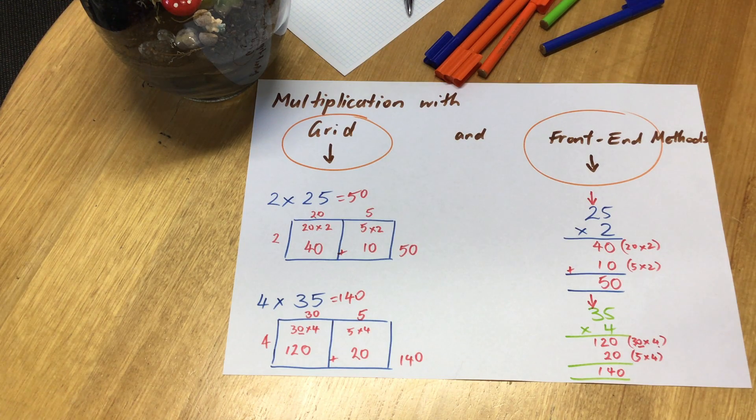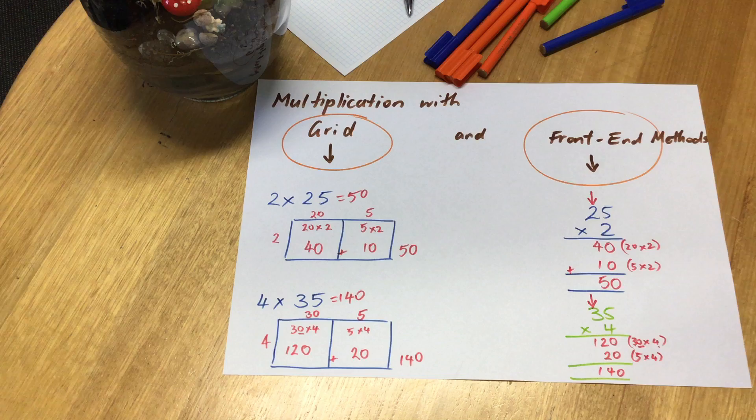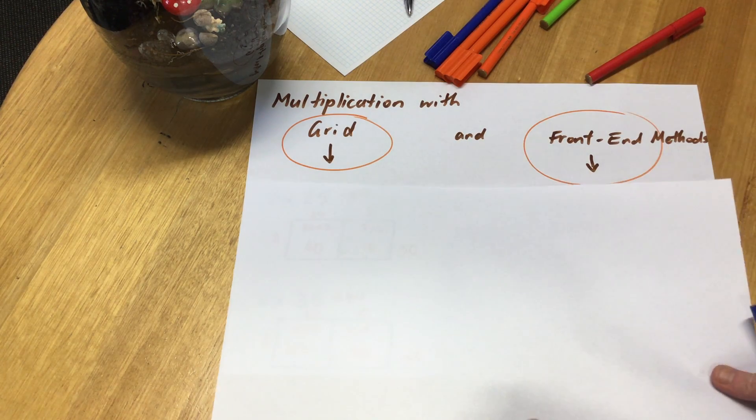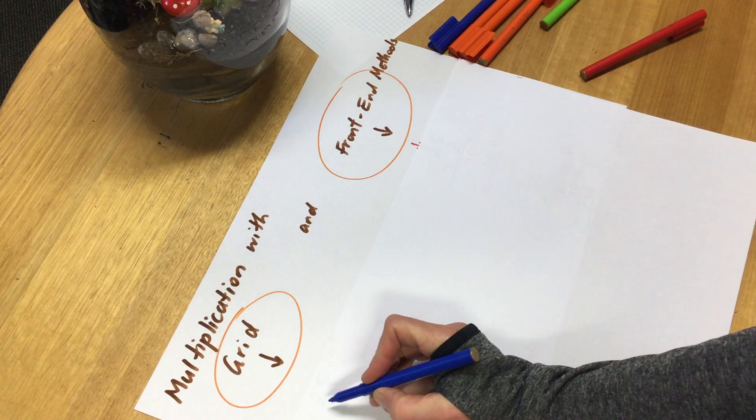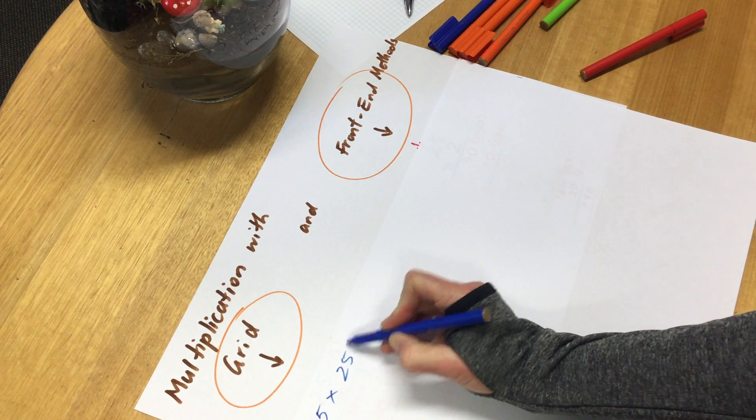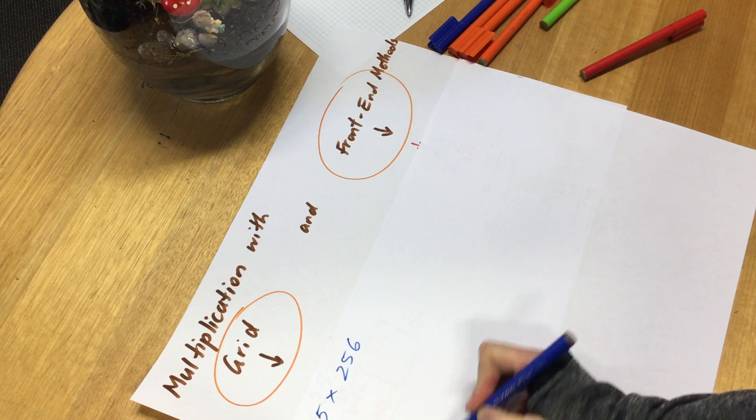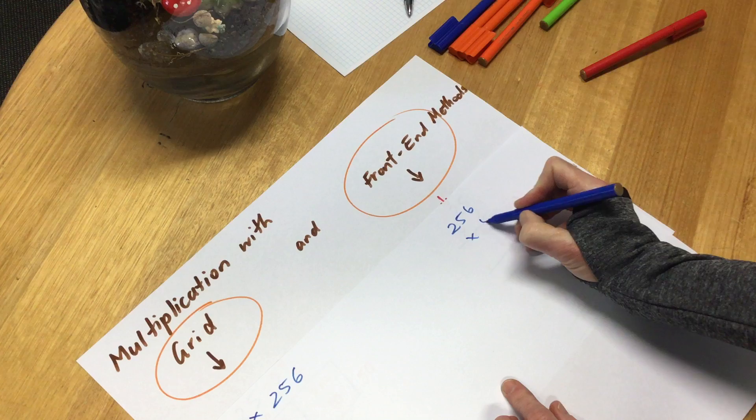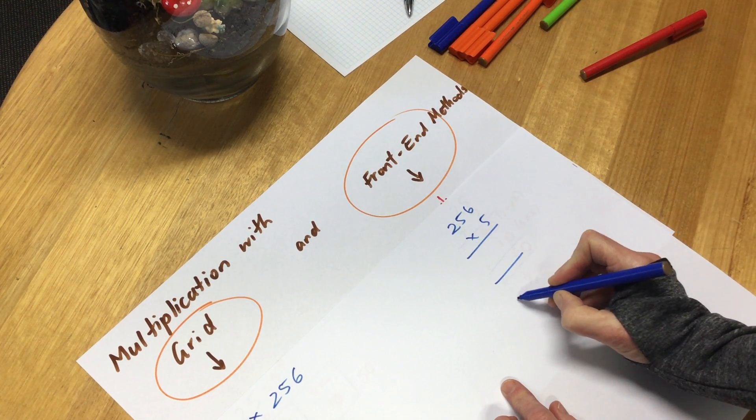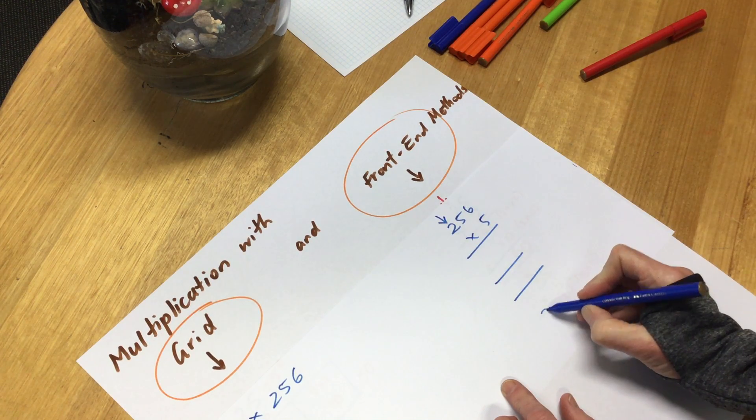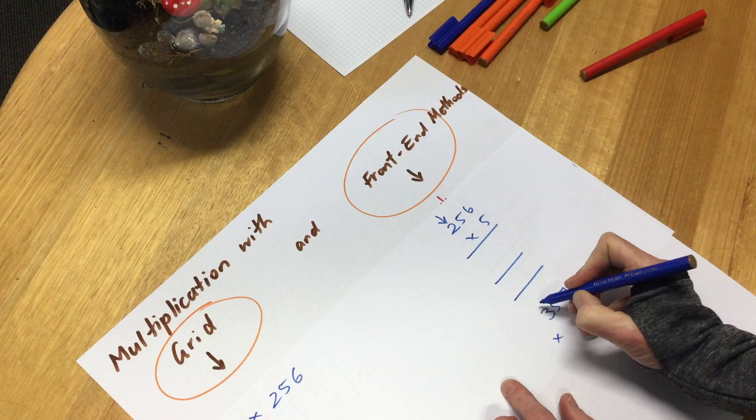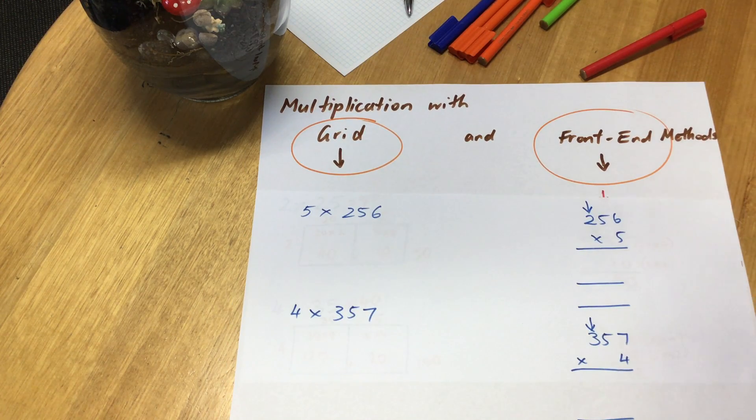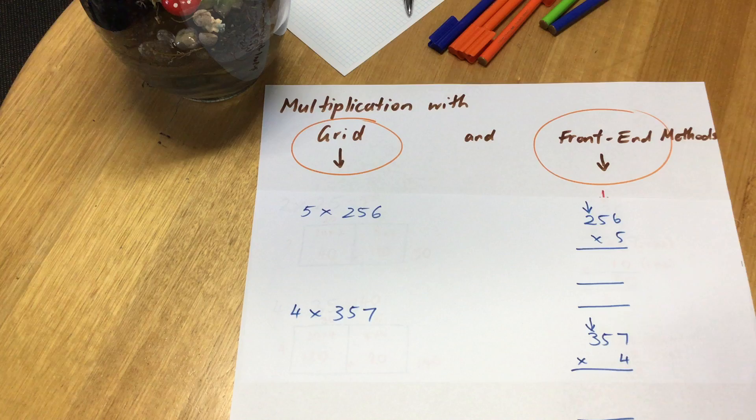Once you get good at that, then we're going to move on to multiplying by 3 digits. Pause the video. Okay everybody, we're back again after your practice time and we're going to have a look. Let me just draw this up. Let's pick another number, 5 times 256, and setting this up here.